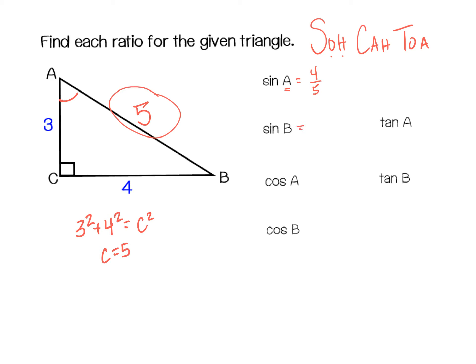Now let's find the cosine of A. Cosine is adjacent over hypotenuse, so adjacent to A is 3 and the hypotenuse is 5 — cosine of A is 3 over 5. For the cosine of B, adjacent to B is 4 and the hypotenuse is still 5, so cosine of B is 4 over 5.